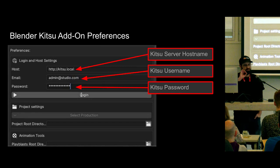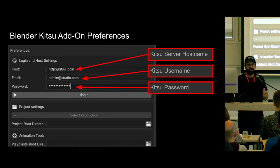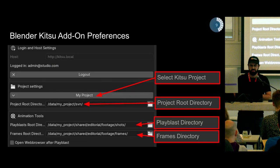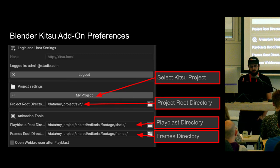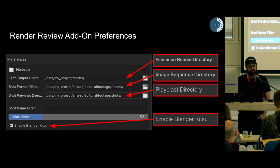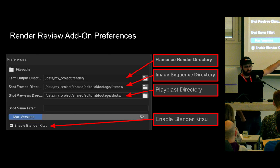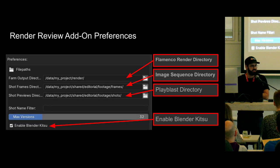I'll cover some important preferences that users would be setting. We have an important add-on called Blender Kitsu, which is what we use to interface with our Kitsu project management server. You log in through the add-on preferences, then set some important directories. That SVN directory containing our .blend files is the root of our production as far as Kitsu is concerned. You'd also tell Kitsu the play blast or previews directory where all your play blasts are rendered, and another directory where your frames are rendered. We have one other important add-on called Render Review — it gets similar settings, with the same shots/play blasts and frames directories, plus a farm output directory. That's where renders from Flamenco will show up.